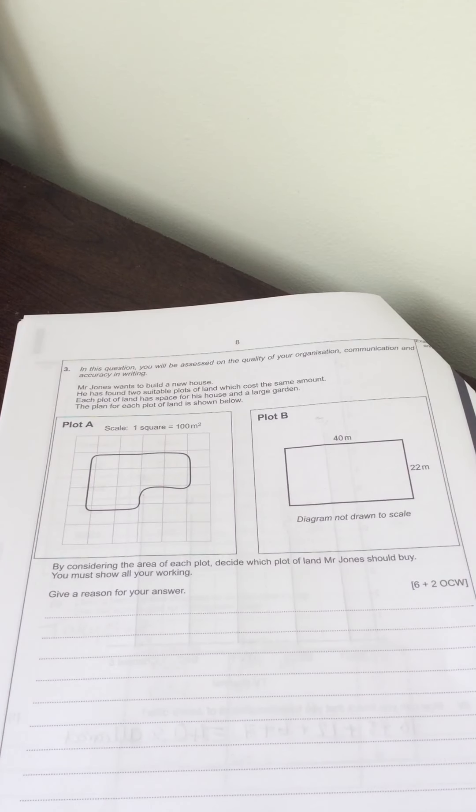Question 3. In this question you are assessed on the quality of your organisation, communication and accuracy in writing. Mr. Jones wants to build a new house. He has found two suitable plots of land which cost the same amount of money. Each plot of land has space for his house and a large garden and the plan for each plot of land is shown below.